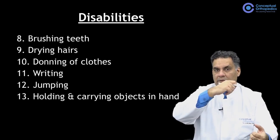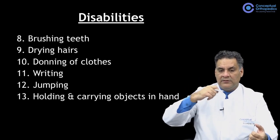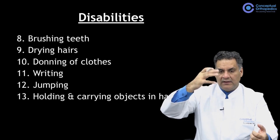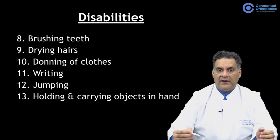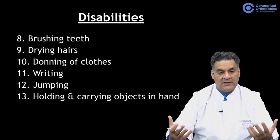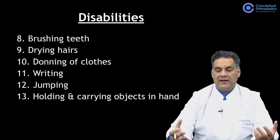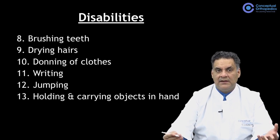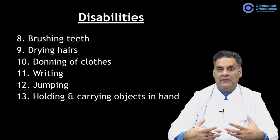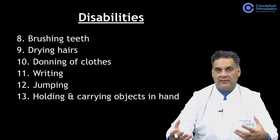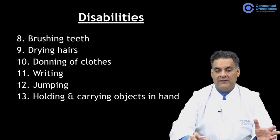Assess the ability to brush teeth and care for hair, both involving important upper limb movements. Discuss clothing management and fine motor movements. Ask about writing ability and any change in writing. Also assess the ability to hold and carry objects, which relates to different types of grasp. The patient should demonstrate in front of the examiner the limitations mentioned in the history.